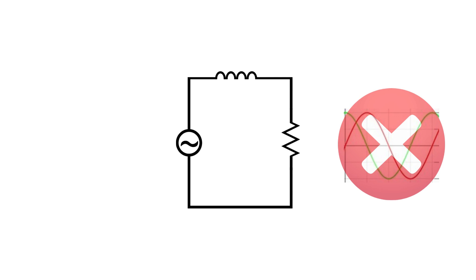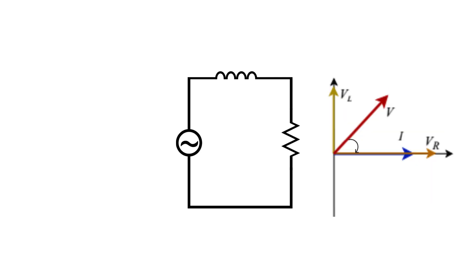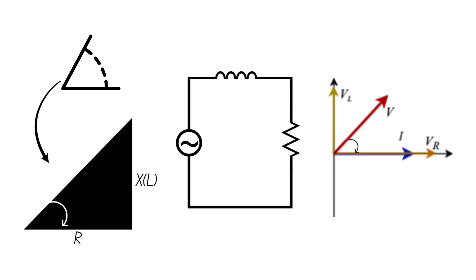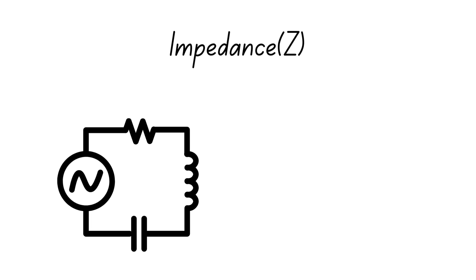So, the combined effect of the two components, namely the impedance, causes the current to lag the supply voltage by some angle between 0 and 90 degrees. The magnitude of this angle depends on the relative magnitudes of the inductive reactance and the resistance. Generally, the impedance of any reactive circuit can be calculated using vector addition or complex numbers. More on this in a later video.